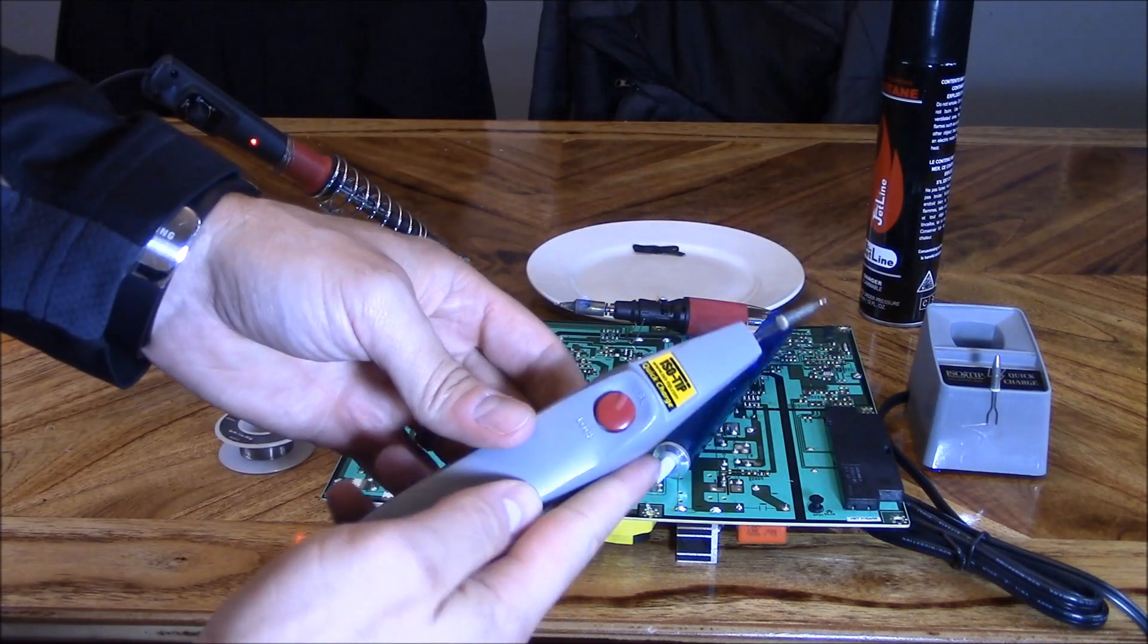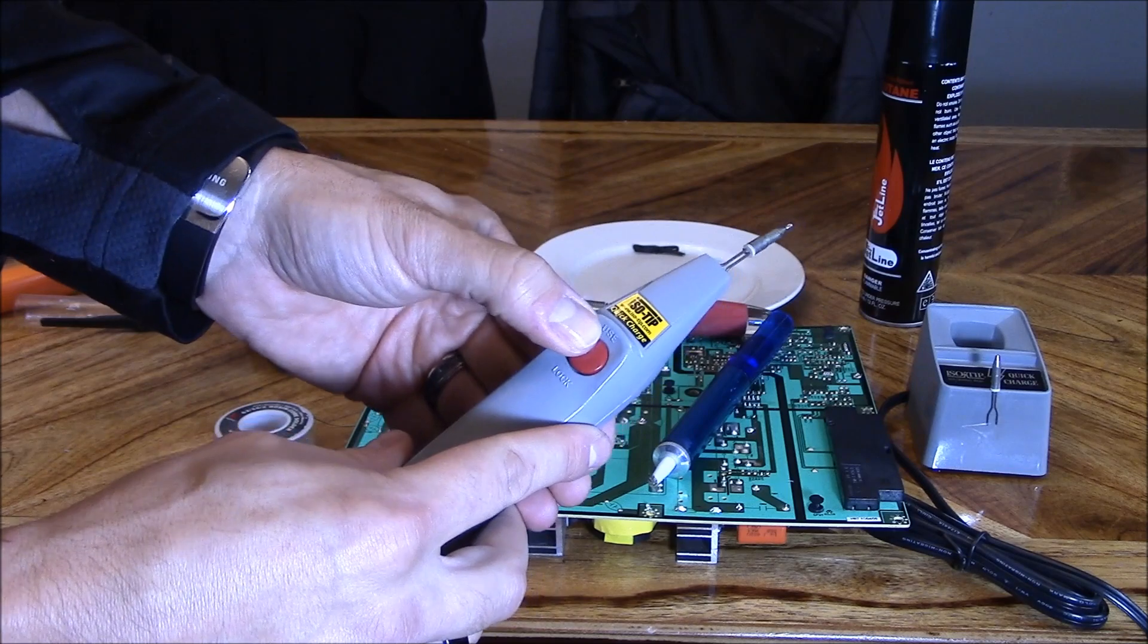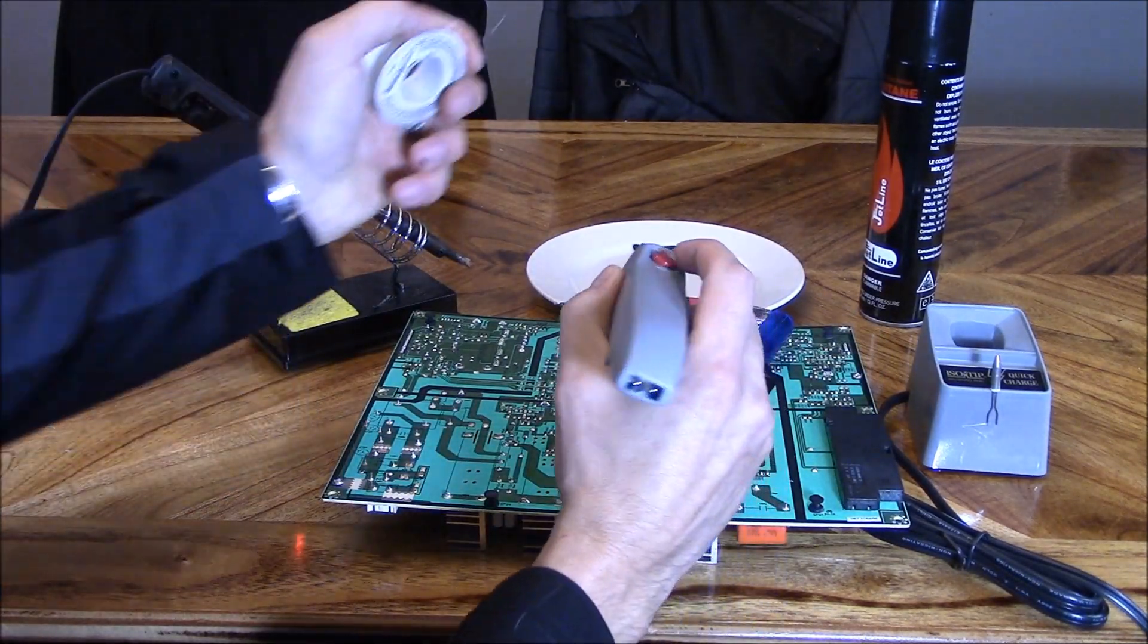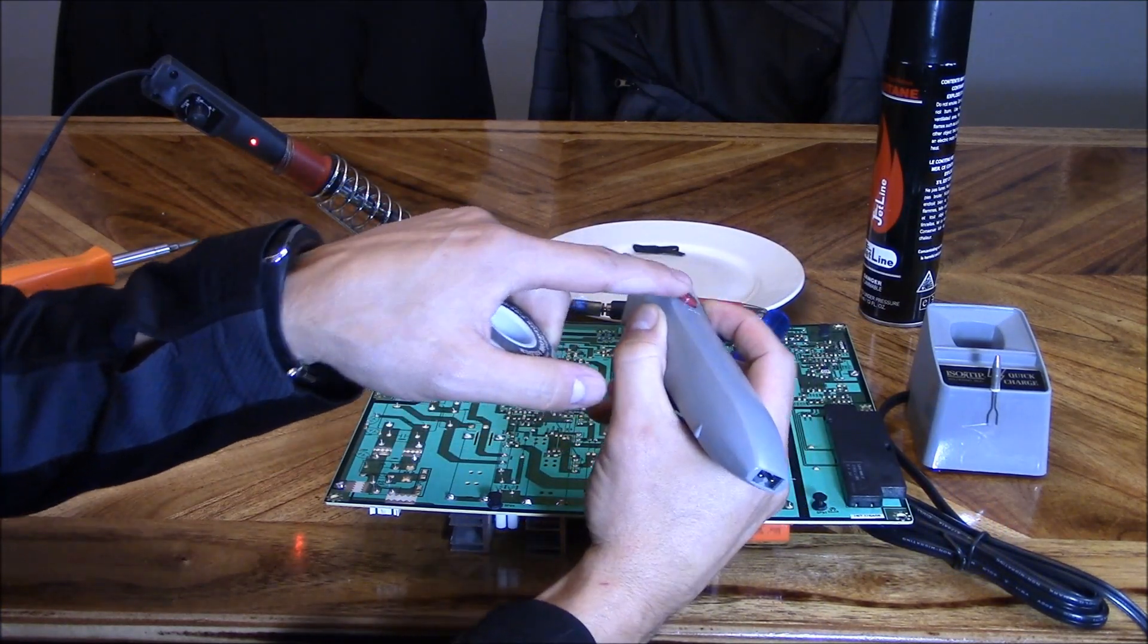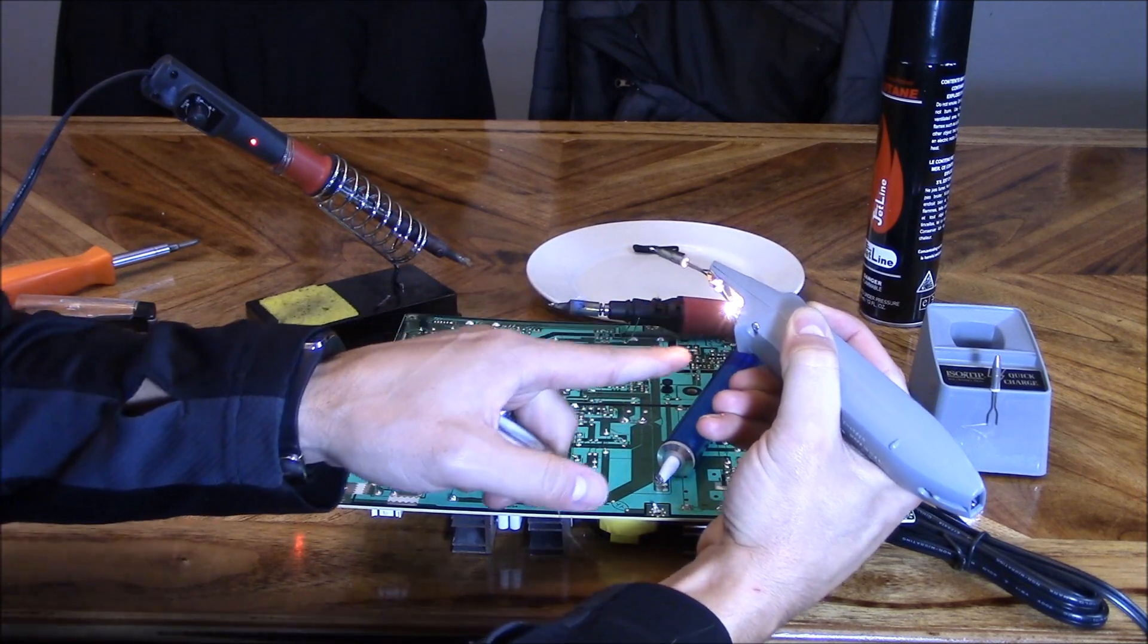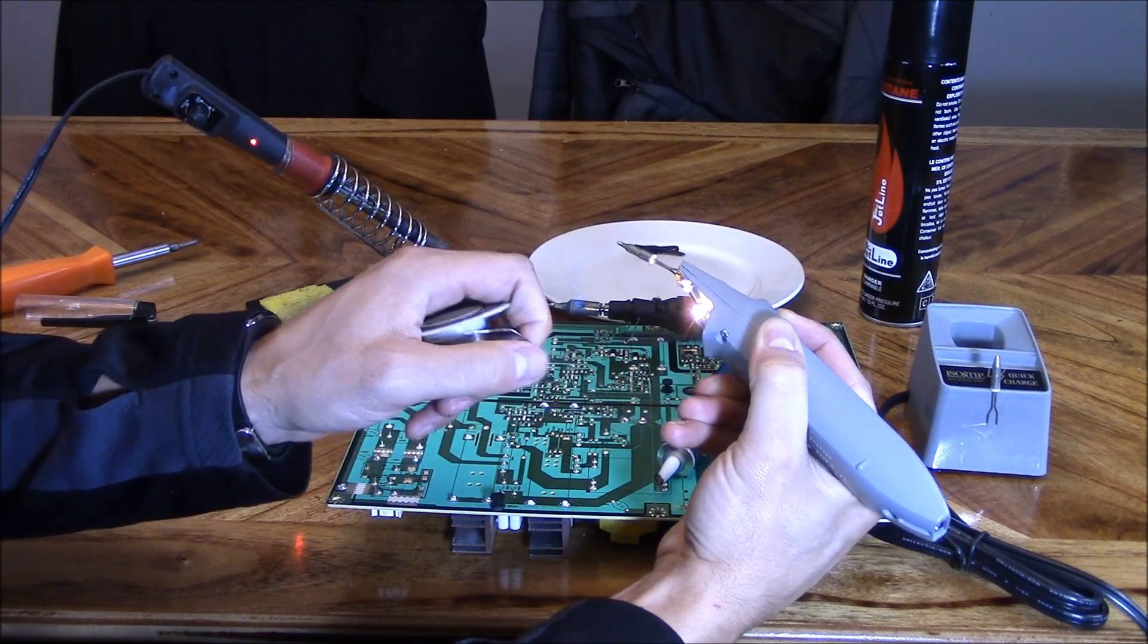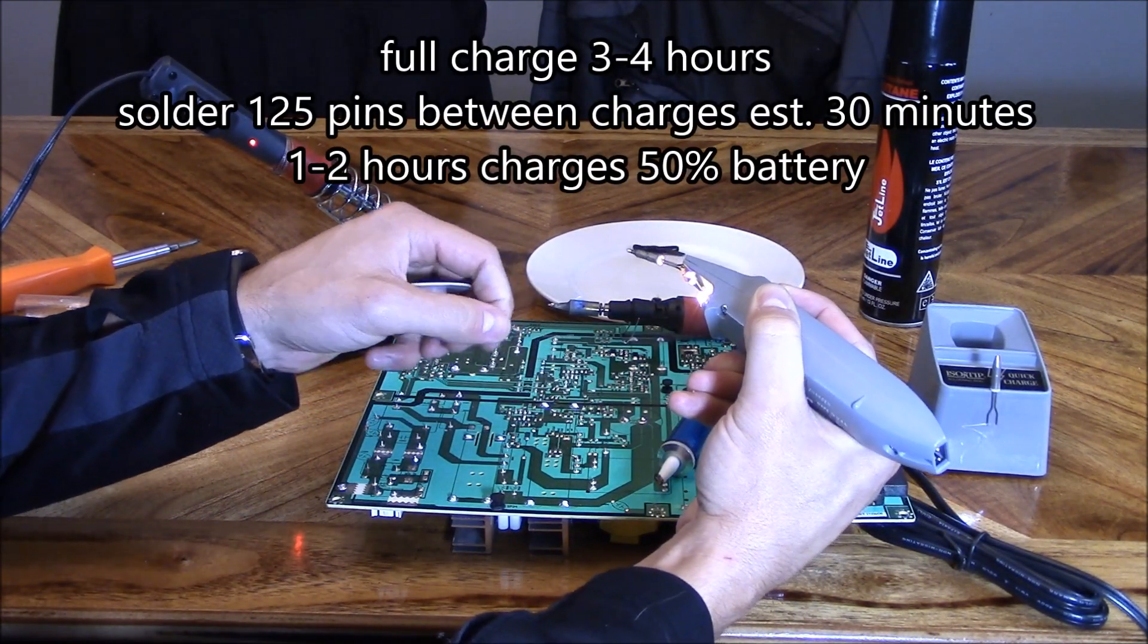Right here, this is an Isotip rechargeable battery-operated soldering iron. It heats up in 10 seconds. It's pretty amazing. It's turned off until you press the button. When you press the button, it's turned on. If you get a bright light, that means it's fully charged. If this light is dim, that means you need to charge it. It takes three to four hours to fully charge and you get 30 minutes of charge time.